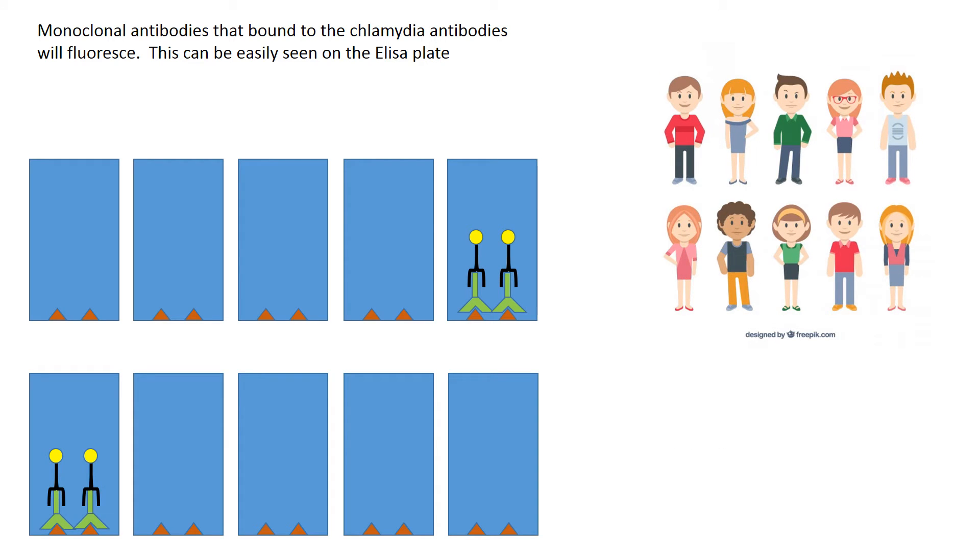This is now the stage where you can see if somebody has the disease, because these fluorescent tags would be fluorescing, or if they were a dye you'd see a color reaction. The particular well would now be able to identify who has the disease, in this case chlamydia.